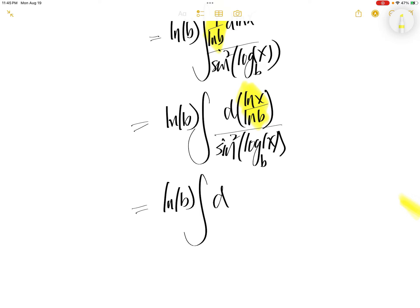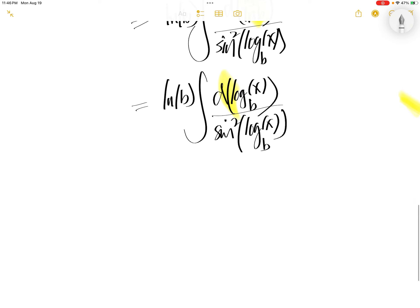Now, this piece, from the property of logarithm, is using change of base. That is log x to the base b divided by sine squared of log x to the base b.